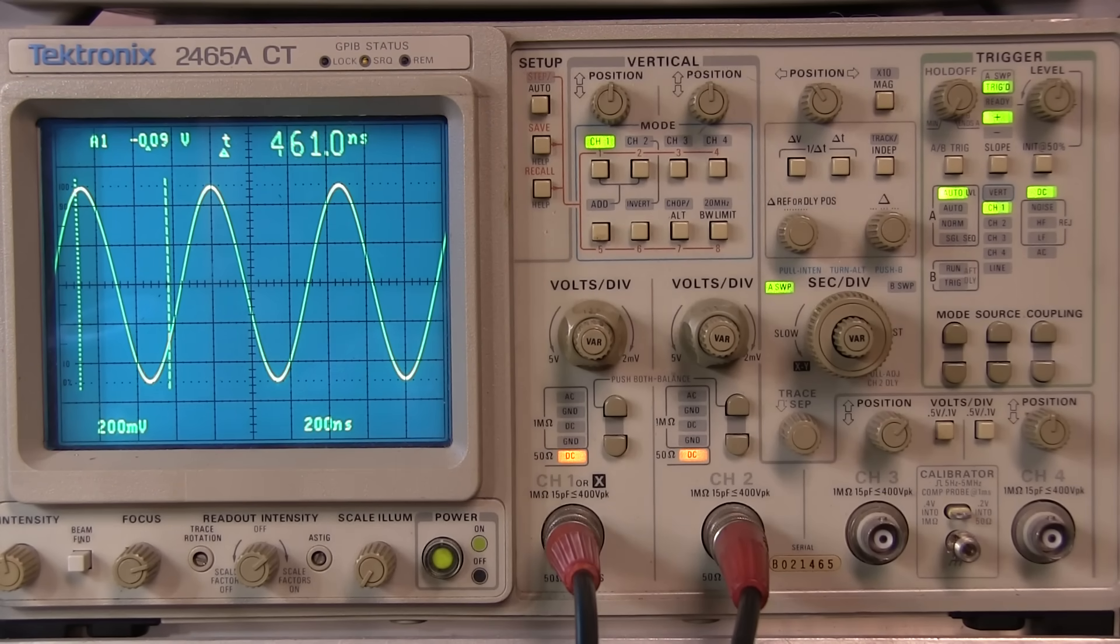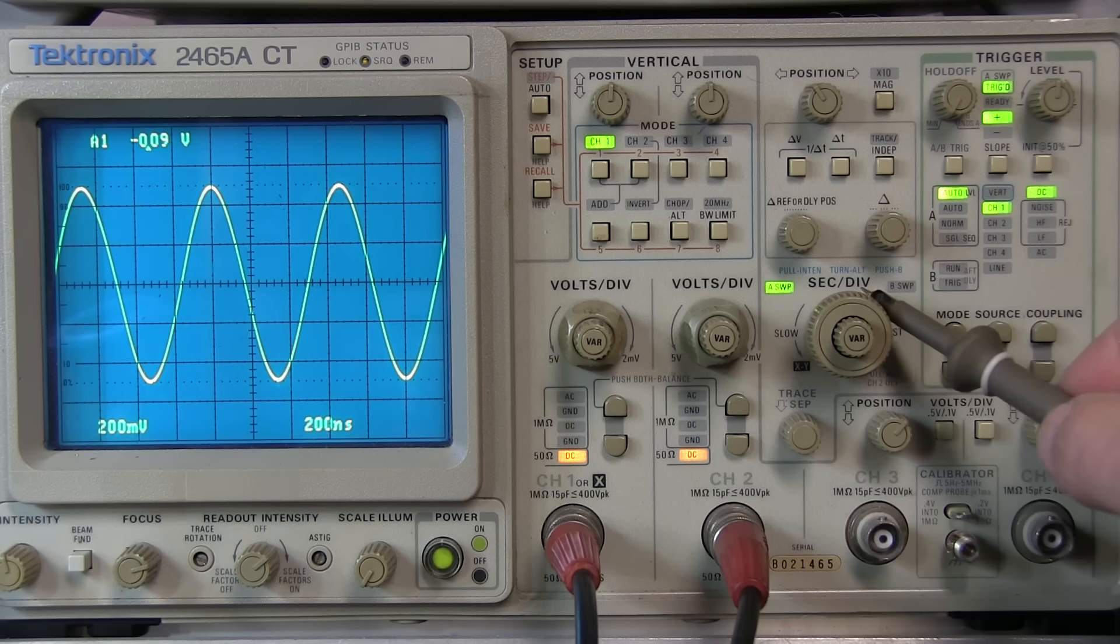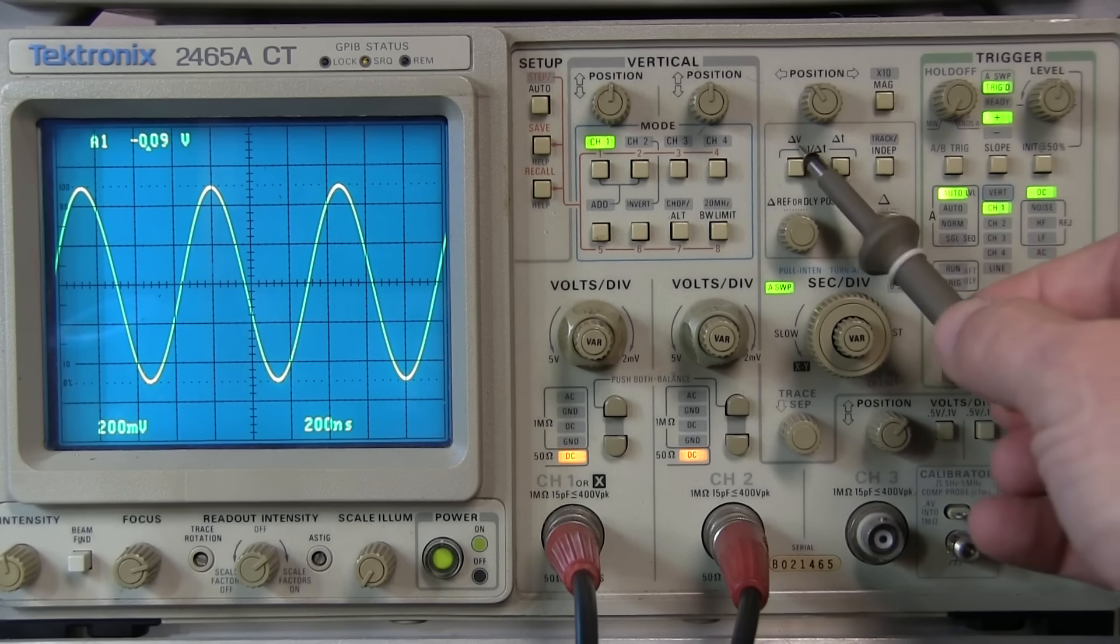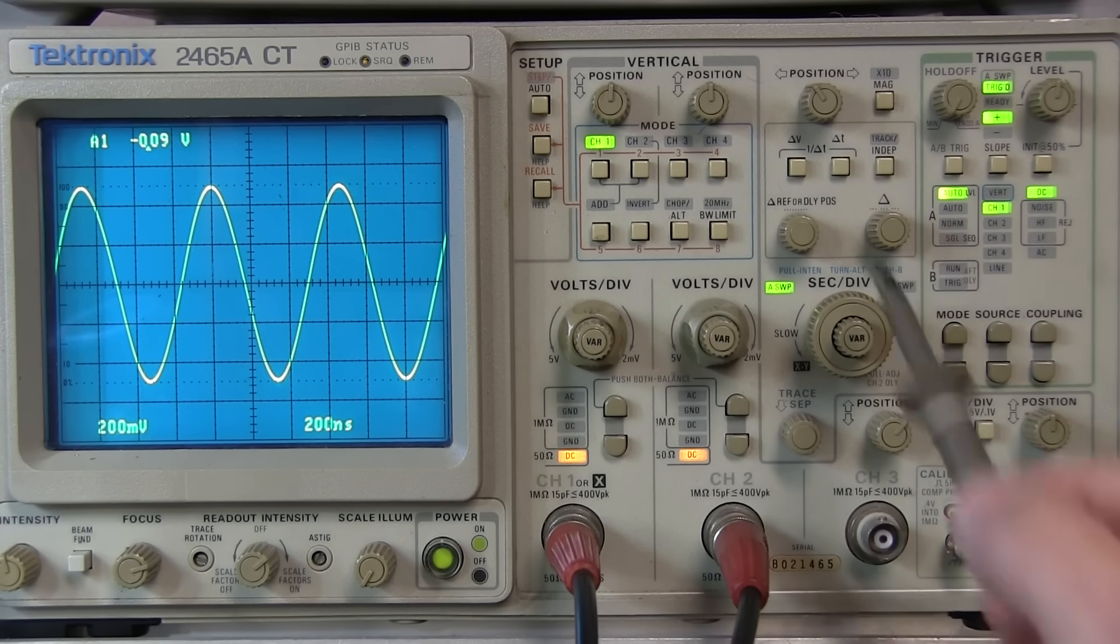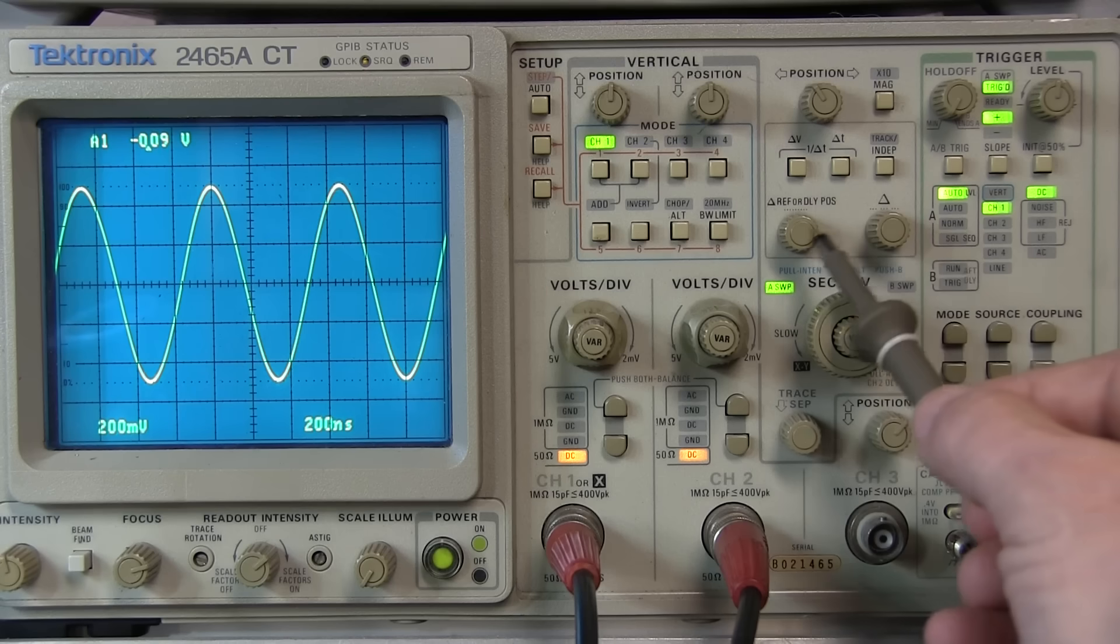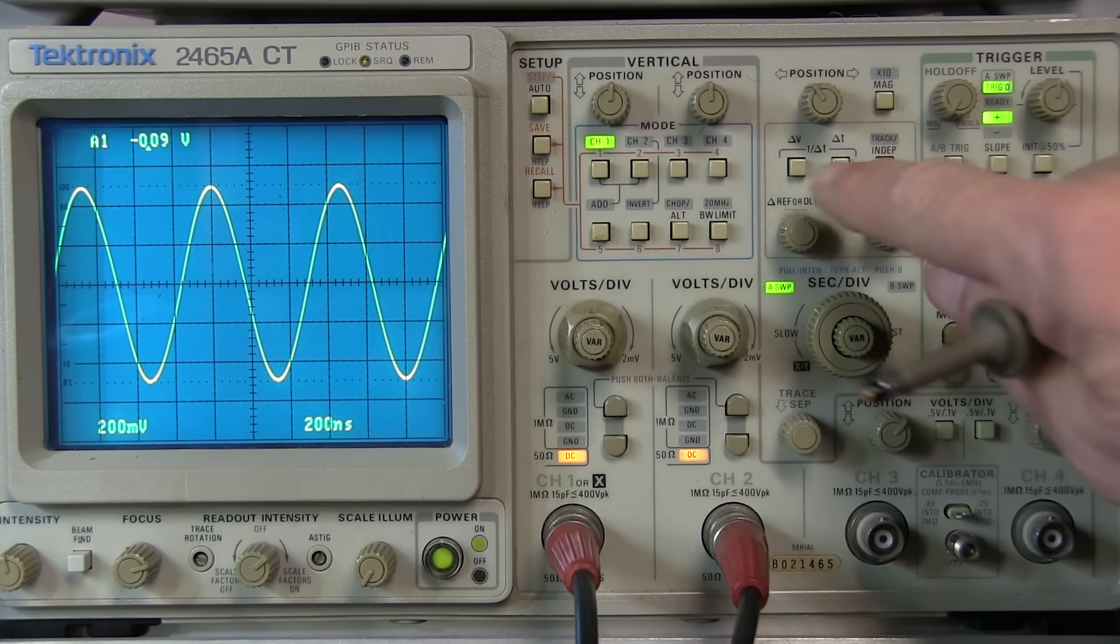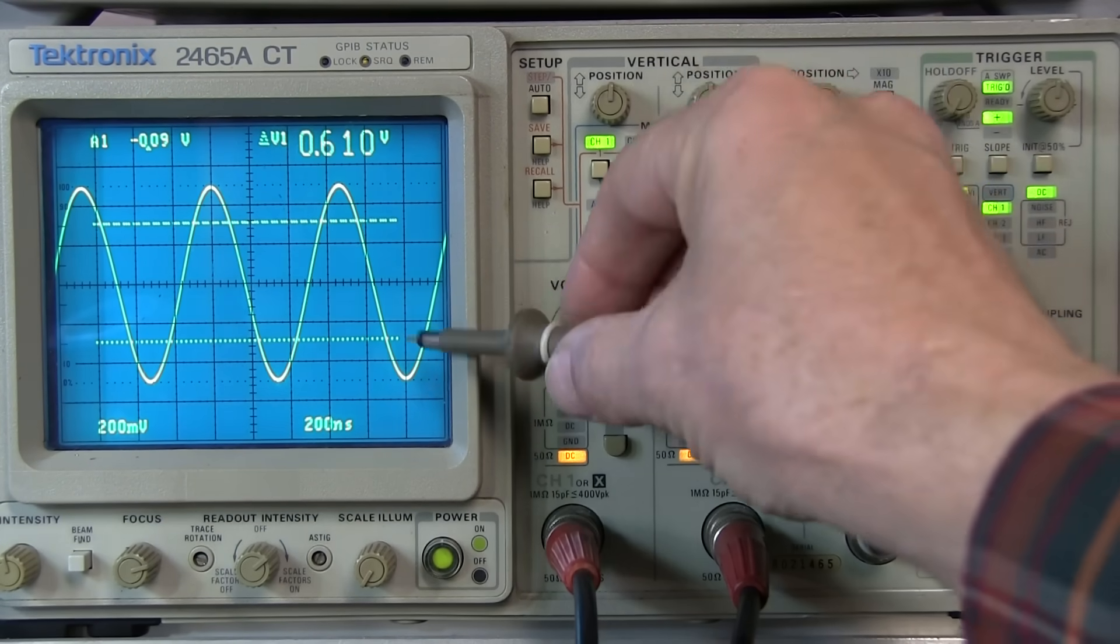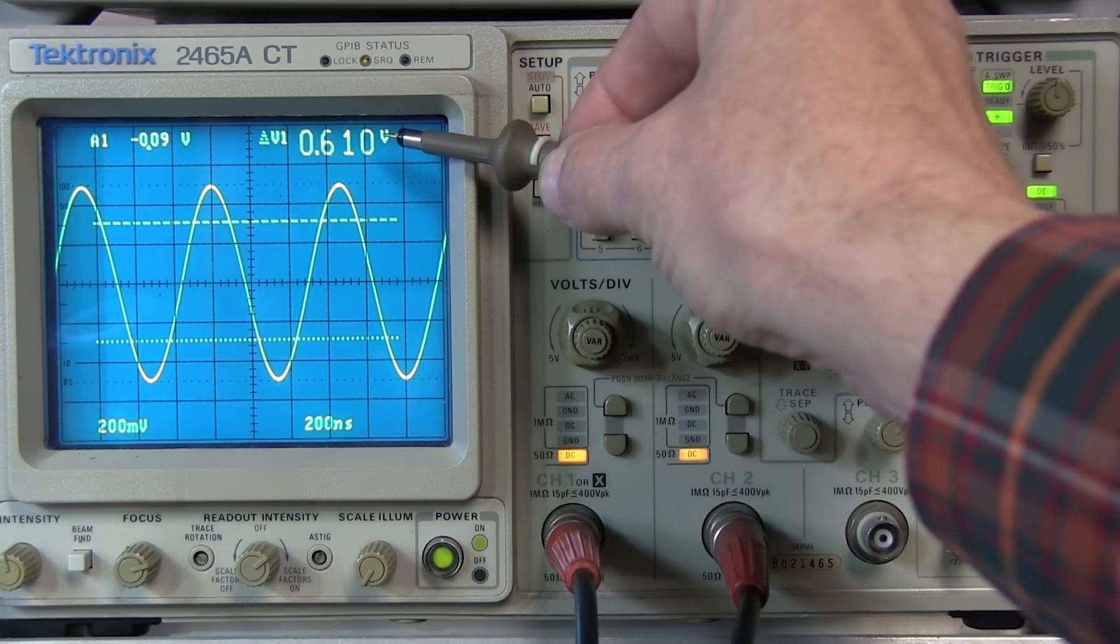So let's get started. The main controls for the cursors are located right here, just above the seconds per division knob. We've got a button to turn on the delta V measurements, the delta T measurements, and then the one over delta T measurements, and then a knob to control each of the two cursor positions. So let's start with the delta V. If we push the delta V button, we can see the two cursors appear on the screen, and I get a delta V voltage measurement right there on the display.